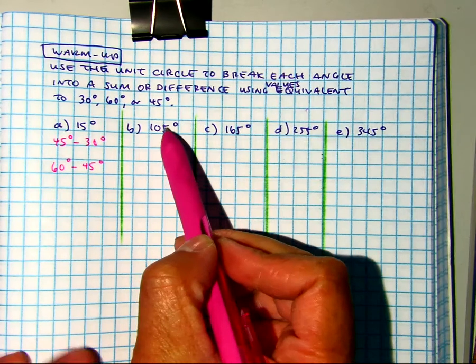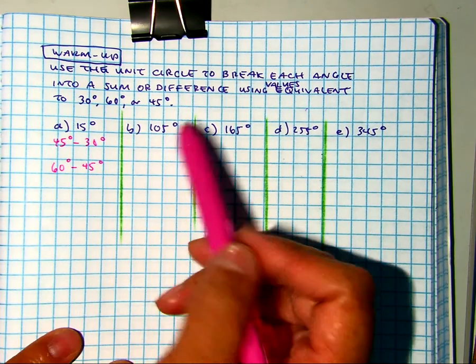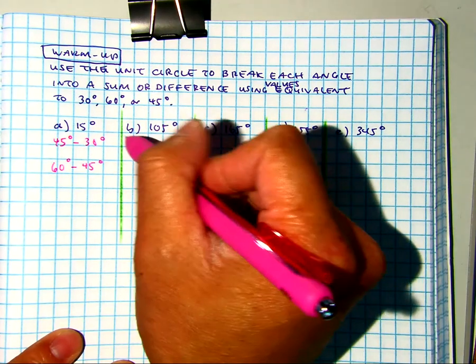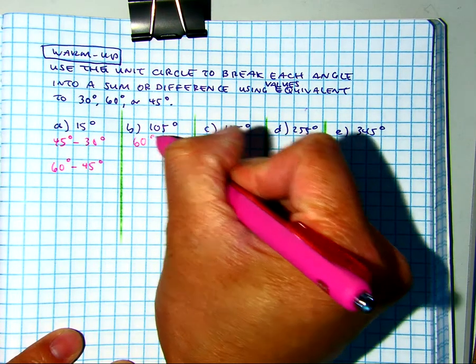All right, where are the two numbers that either add or subtract to be 105? 60 plus 45.